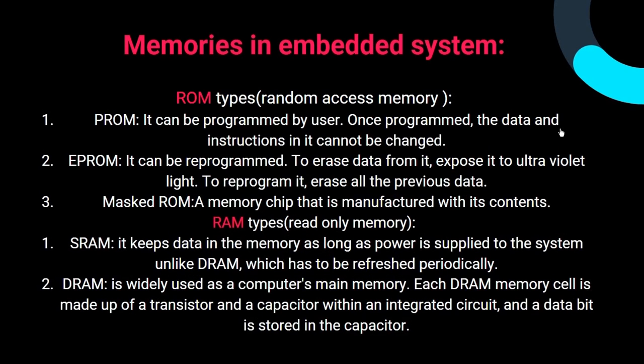The basic memories in an embedded system are ROM (read-only memory) and RAM (random access memory). ROM is divided into PROM, the programmable read-only memory, which can be programmed by the user but once programmed cannot be changed. Then EPROM, the erasable programmable read-only memory, which can be erased by exposing it to ultraviolet light and then reprogrammed.